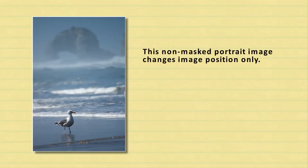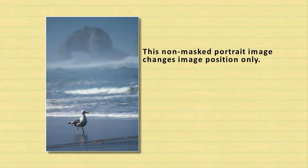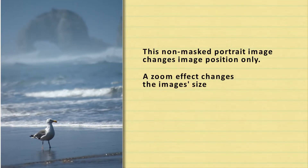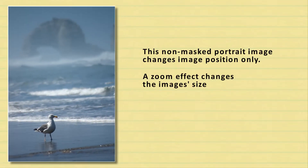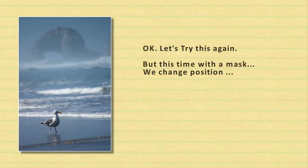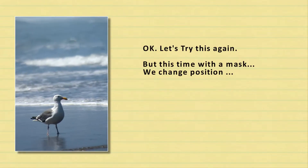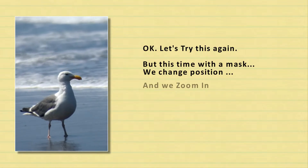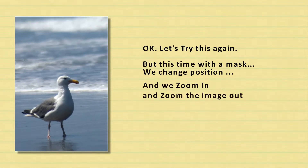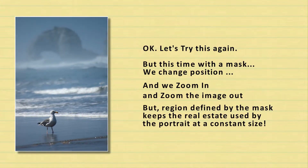An unmasked image takes up more screen real estate. If you zoom in on it, it just takes up more screen space than you may want. Now, if you mask it, however, you can keep the same real estate that you have on the screen, but you can zoom into any part of the image you want.